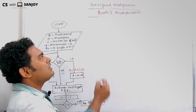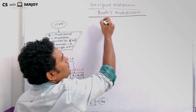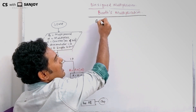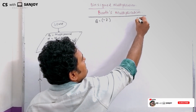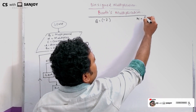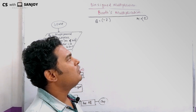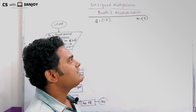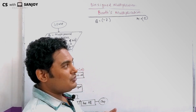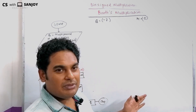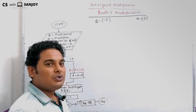In this example, we consider Q equals to minus 7 and M equals to 5. So we will do the multiplication of these two numbers: Q = -7 and M = 5. Before going to the computation, I am giving you an assignment, and at the end of the video you should compute the result of the assignment.